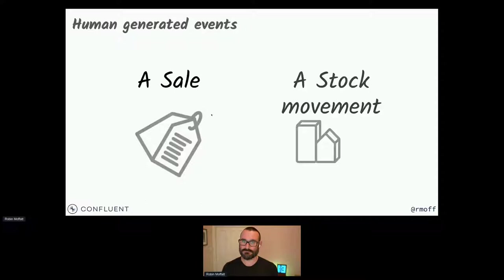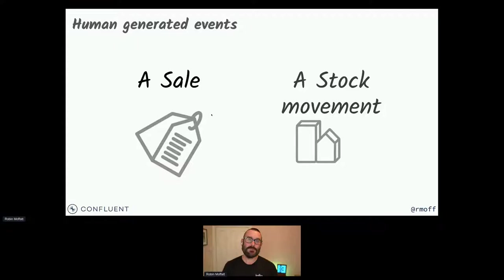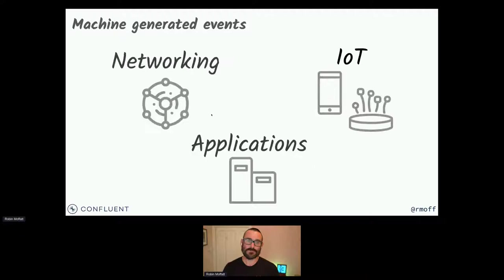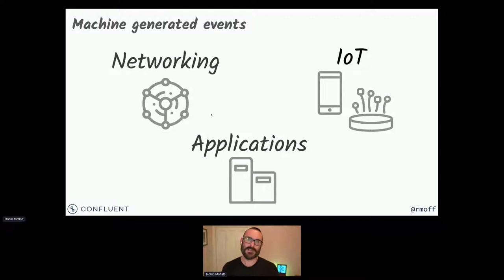There was a sale, something happened, something was bought. What happened? I bought a pair of trousers. Or we moved some stock in a warehouse — stock movements with details of that thing. We moved inventory from one location to another at a given time. So we have human-generated events, and if you think about the domain or business you work in, you can think of dozens of examples. And we have machine-generated events also — network routers continually emitting events as packets pass back and forth, or IoT devices.